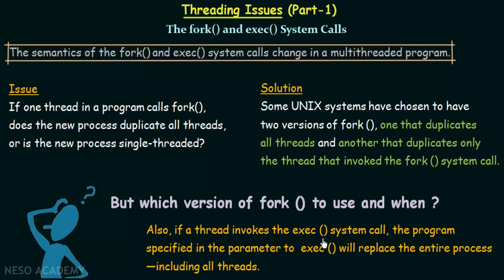If a thread invokes the exec system call, the program specified in the parameter to exec will replace the entire process including all the threads. So if a thread belonging to a process with many threads calls exec, the entire process — all threads included — will be replaced by the new process passed as a parameter to exec. There is no exception to that.